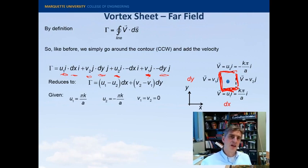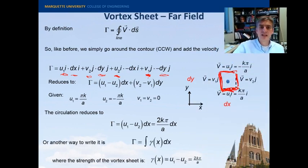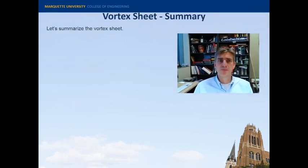And we've already solved for the u and v components. And so this simplifies a bit more. So the circulation just reduces down to this 2k pi over a dx. All right. Another way to write this would be the integral of gamma of x dx, where gamma of x equals u1 minus u2. Now, we're really going to use that next time when we derive the finite length vortex sheet. But this time, I thought I would just show you how those two are connected.